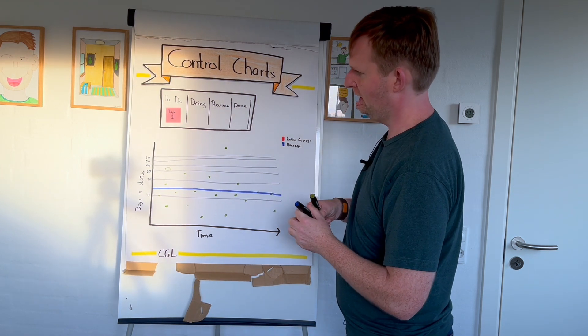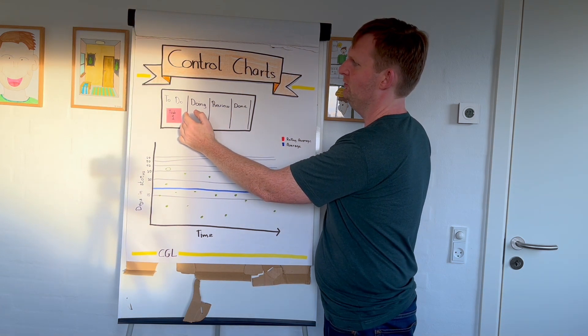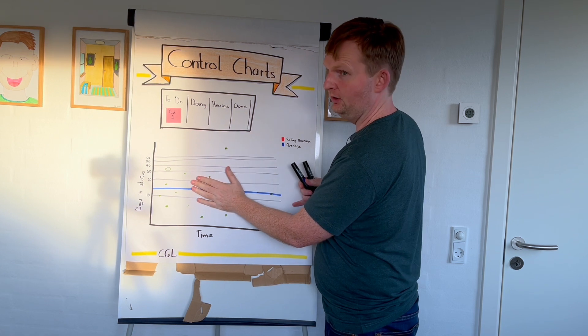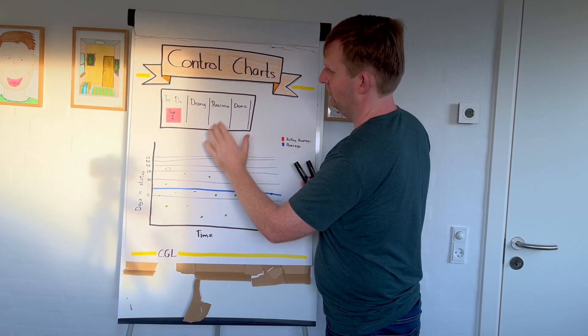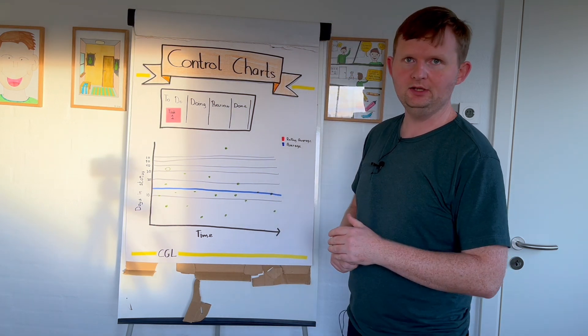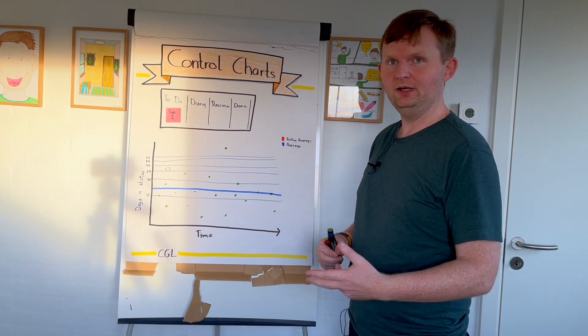Meaning that on average, a story from when we move it from to-do through doing through review into done—this is only done issues that we are drawing by the way—then it's on average 12 days. That would be 12 working days, so one work week and two days.